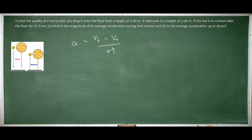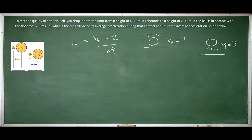The phrase 'in contact with the ground' is actually a key phrase, because what we actually need is the initial velocity of the tennis ball immediately before it hits the ground, and the final velocity immediately after it leaves the ground to go back upward. We will also need the time interval during which the tennis ball is in contact, but that was given to us as 12 milliseconds. Thus, our first task is to calculate the initial velocity of the tennis ball immediately before it hits the ground.